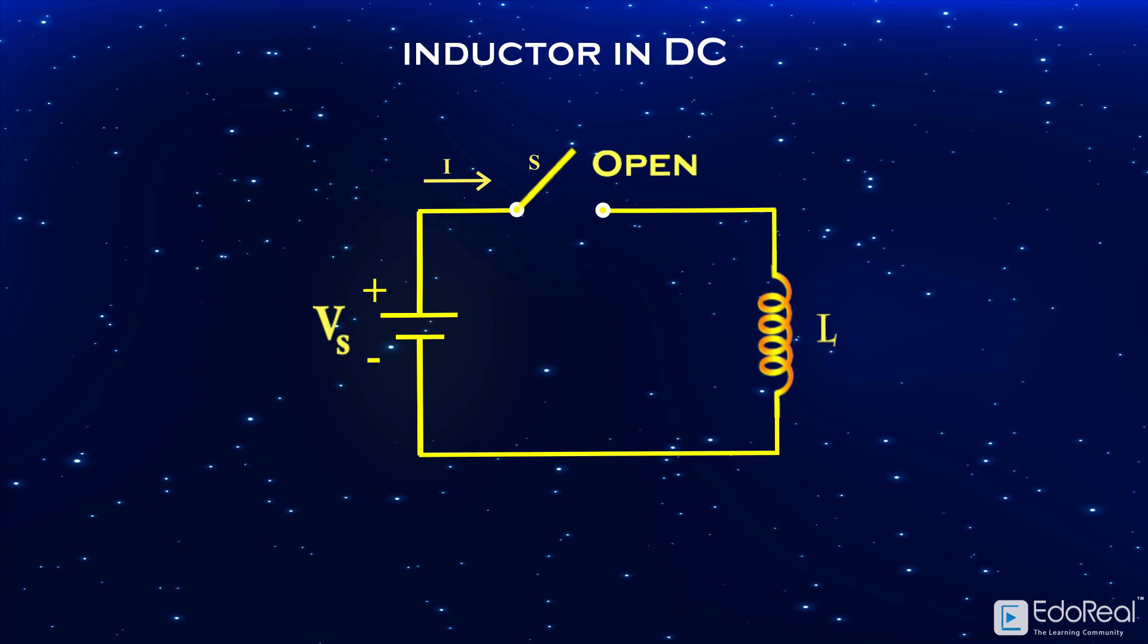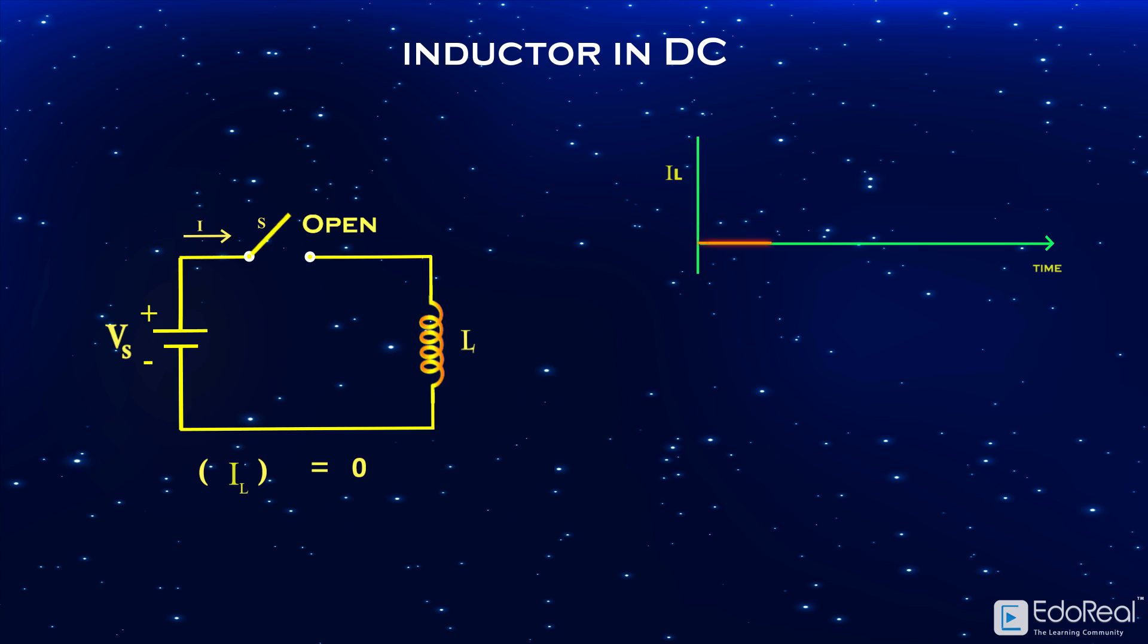Until the switch is open, there will be no flow of electrons through the inductor. That is, zero electrons flow through it. So the magnitude of current is zero and voltage across inductor is also zero.